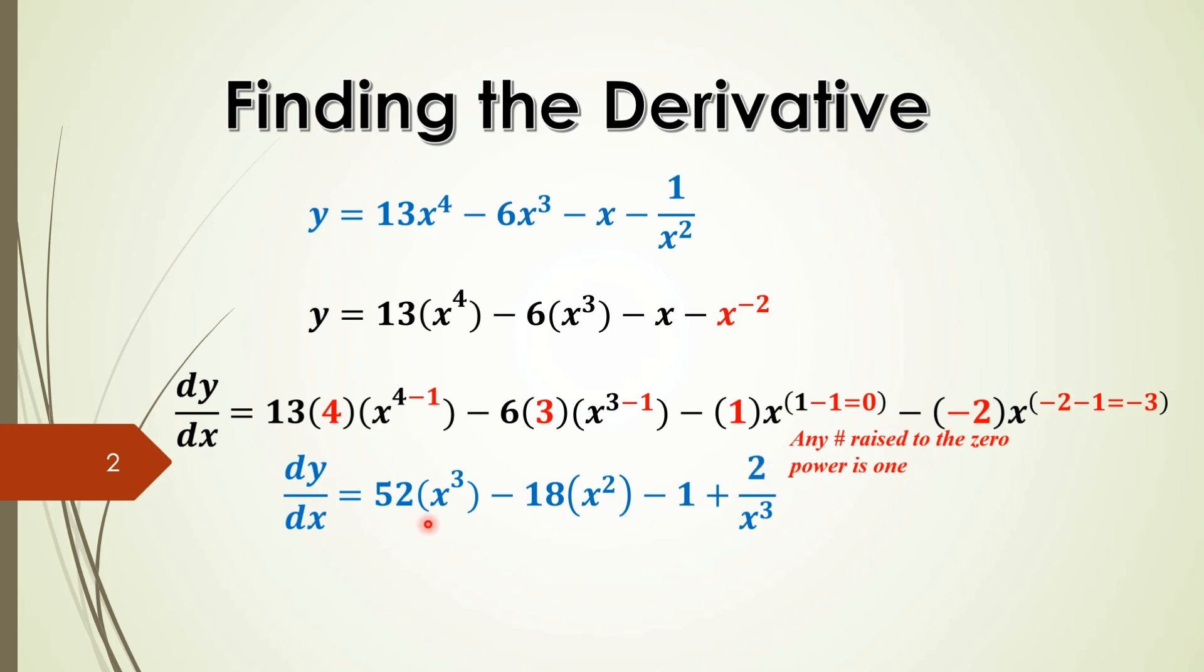And when we look at these guys here, we don't have an x here. So we can't take out a common factor there either. So this is your final answer.